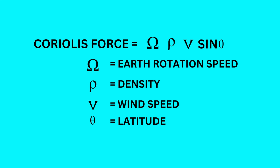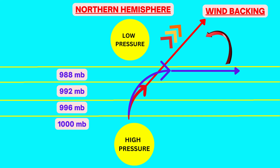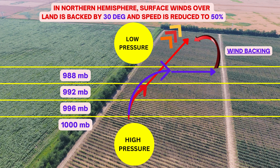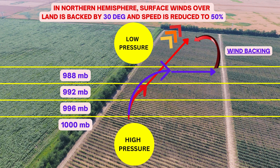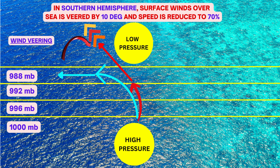Reduction in speed causes a reduction in Coriolis force and a reduction in Coriolis force results in backing of winds in northern hemisphere. In northern hemisphere, surface winds over land is backed by 30 degrees and speed is reduced by 50%. Over sea, the friction is less, so speed is reduced to 70% of original value and backing is only by 10 degrees as compared to geostrophic wind. You need to remember these figures and values for the purpose of examination. Opposite effects will happen in southern hemisphere — basically the backing will change to veering and the rest of the figures will remain the same.